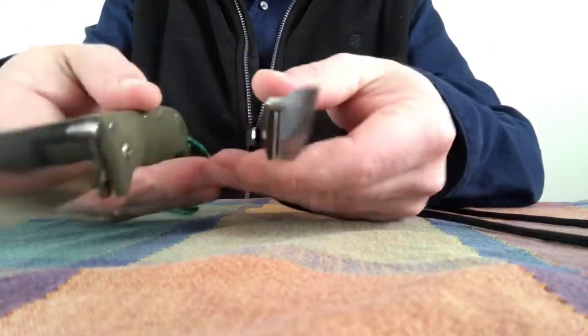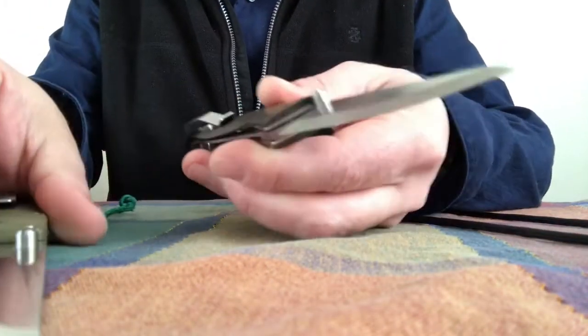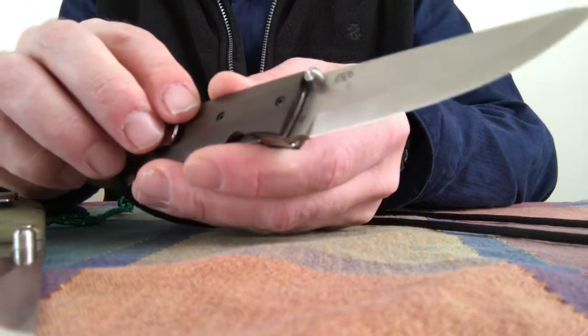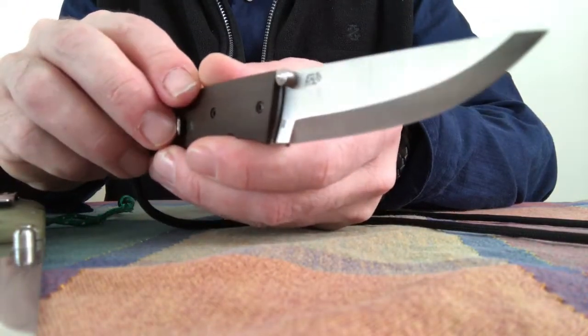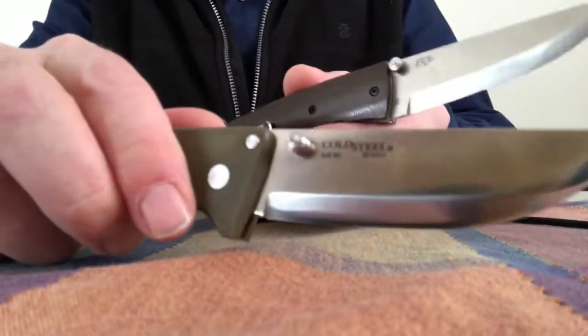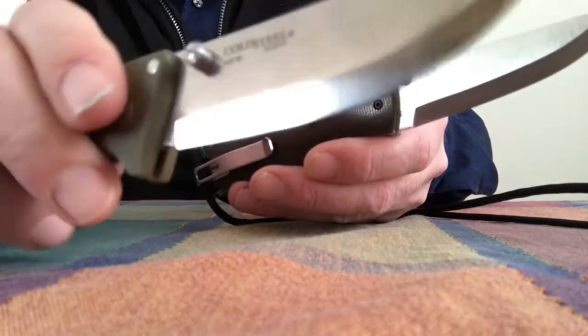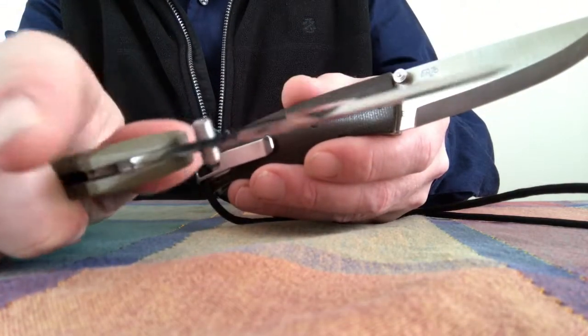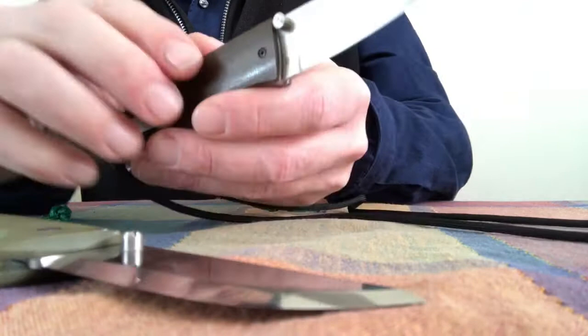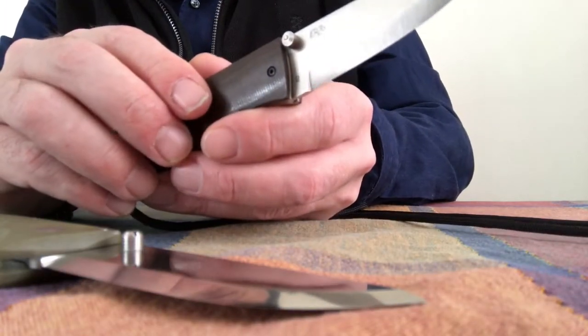The other thing is you're getting better steel. This is D2 steel, a very hard steel. This is Oz8 steel, so it's a little softer. It's probably going to tend to roll rather than chip. This will probably tend to chip rather than roll.